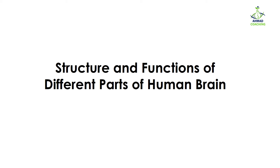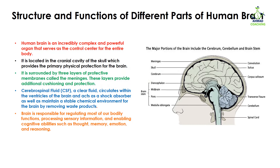Hey learners, welcome to Amat Coaching. I'm your teacher Dr. Anam. Today we are going to study about the structure and functions of different parts of the human brain. The human brain is an incredibly complex and powerful organ that serves as the control center for the entire body, controlling every single movement, every single emotion, and every single thought of a person.